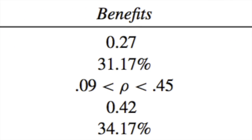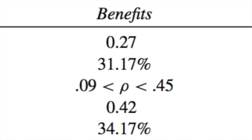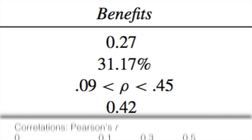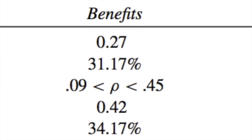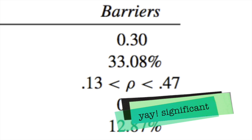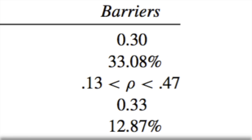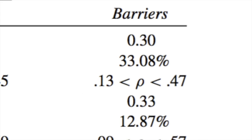Moving across to perceived benefits, the credibility interval shows a significant link between perceived benefits and someone's likelihood to change a behaviour. The correlation of 0.23 is pretty close to what we'd consider a moderate correlation of around 0.3. Moving over to perceived barriers, this is also significant — the credibility interval does not cross zero, showing a moderate relationship. If someone perceives that there aren't many barriers, they're more likely to engage in the behaviour.